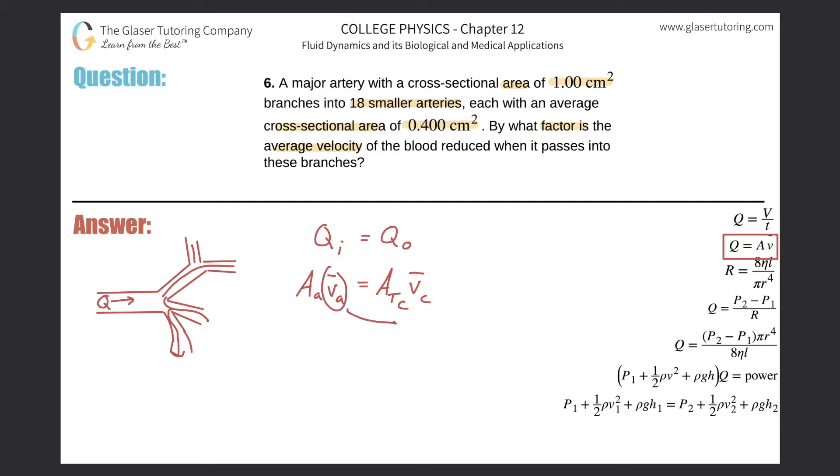So basically to find that ratio now, I want to bring this velocity over to the right-hand side, and then I want to bring this A into the denominator on the left. So basically this would be the area of the major artery divided by the total area of those smaller arteries will then be equal to the average velocity through those capillaries divided by the average velocity through the larger artery. So this is what we're searching for, right here.